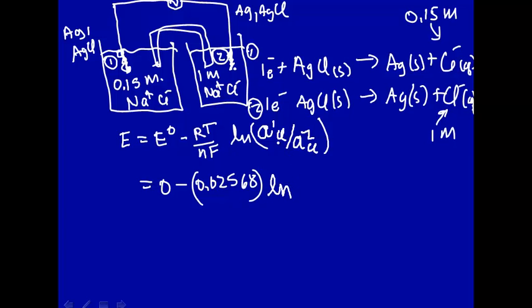RT over F times the natural log. Now, let's make the activity the activity coefficient. So, this would be gamma of the chloride, single ion activity coefficient, times the concentration of chloride. And, this has to be in molar, because we're using a standard state, although standard states cancel out.